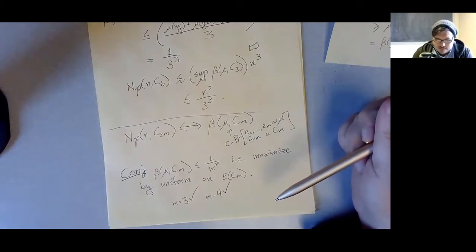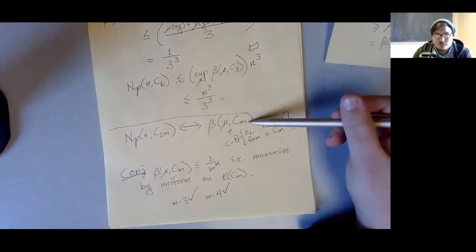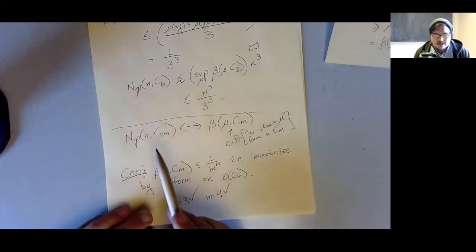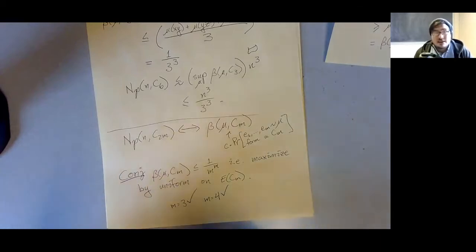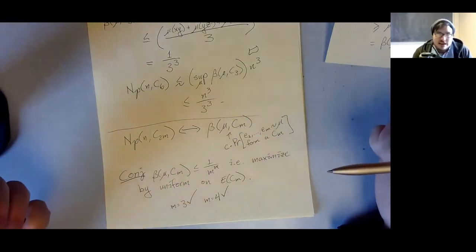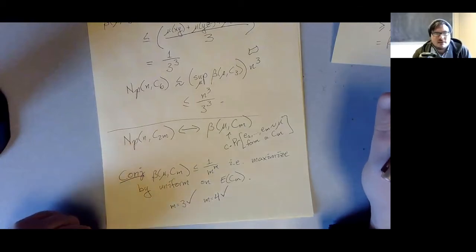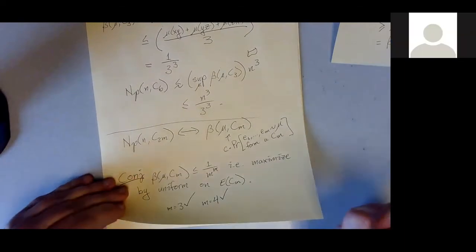There was nothing really special about cycles here. What was really important is that C_{2m} is the one-subdivision of C_m — if you subdivide each edge once of C_m, you get C_{2m}. This general idea about relating this extremal problem to an optimization over probability masses works for any graph formed by a one-subdivision, with some restrictions.